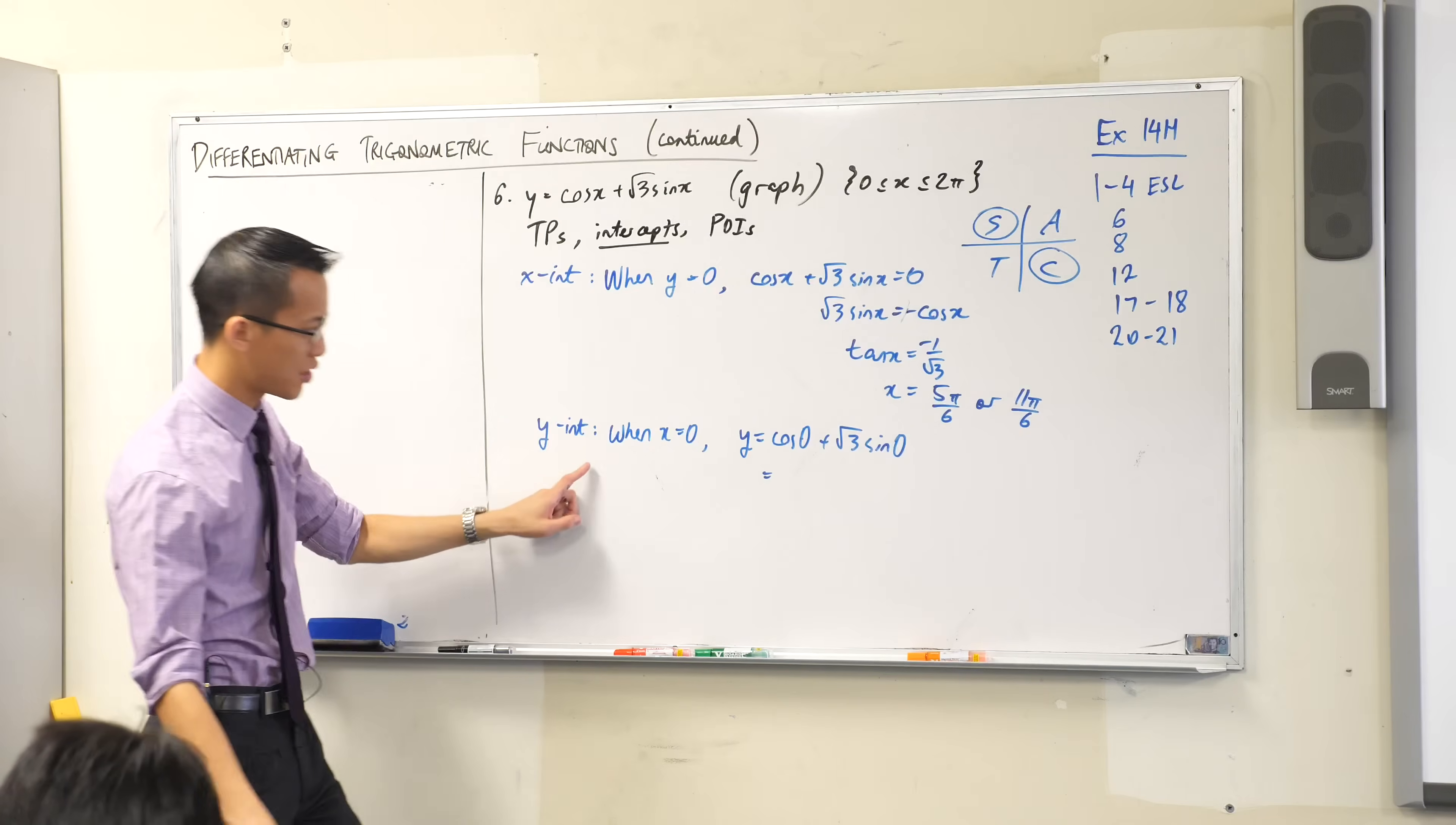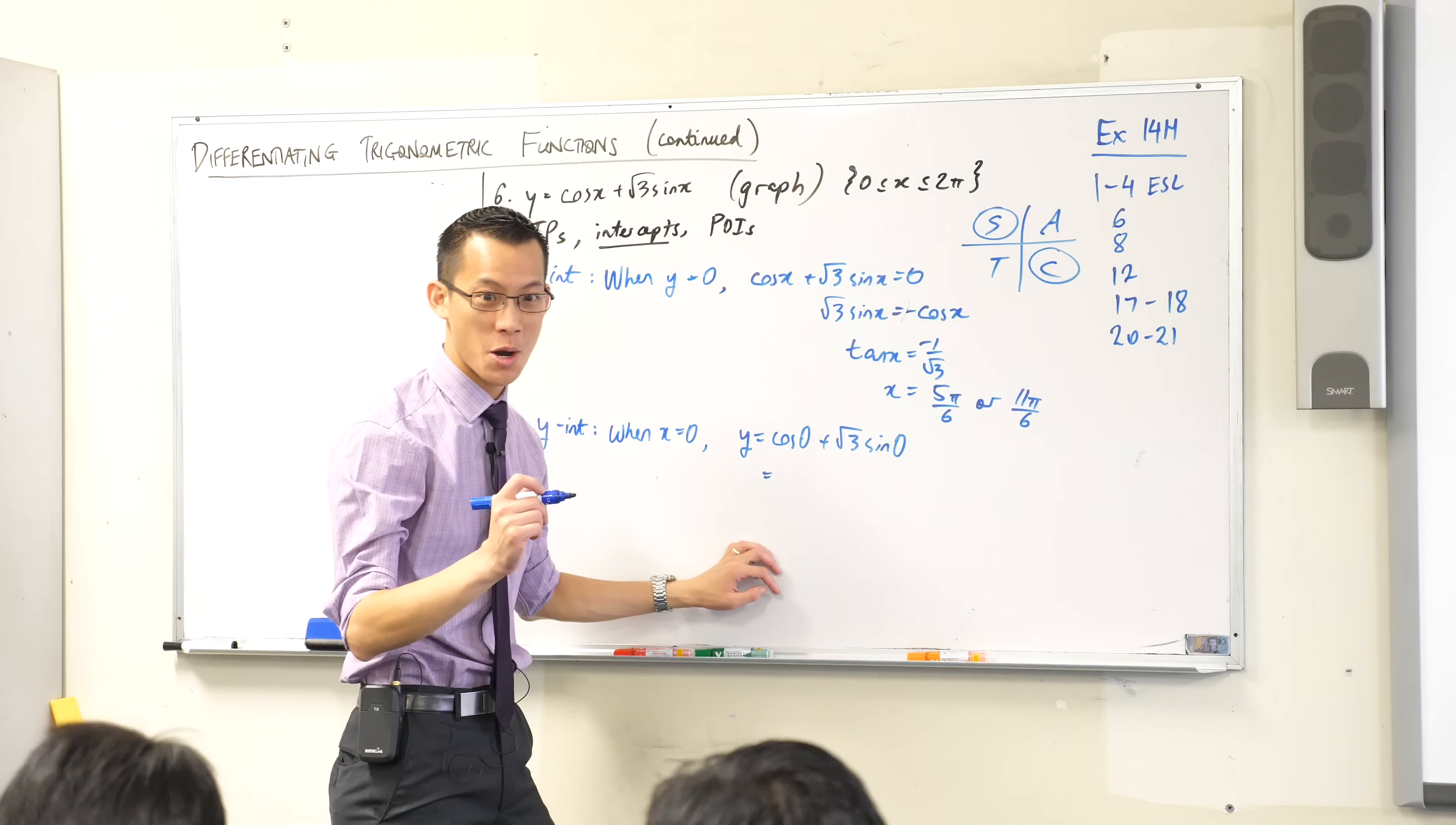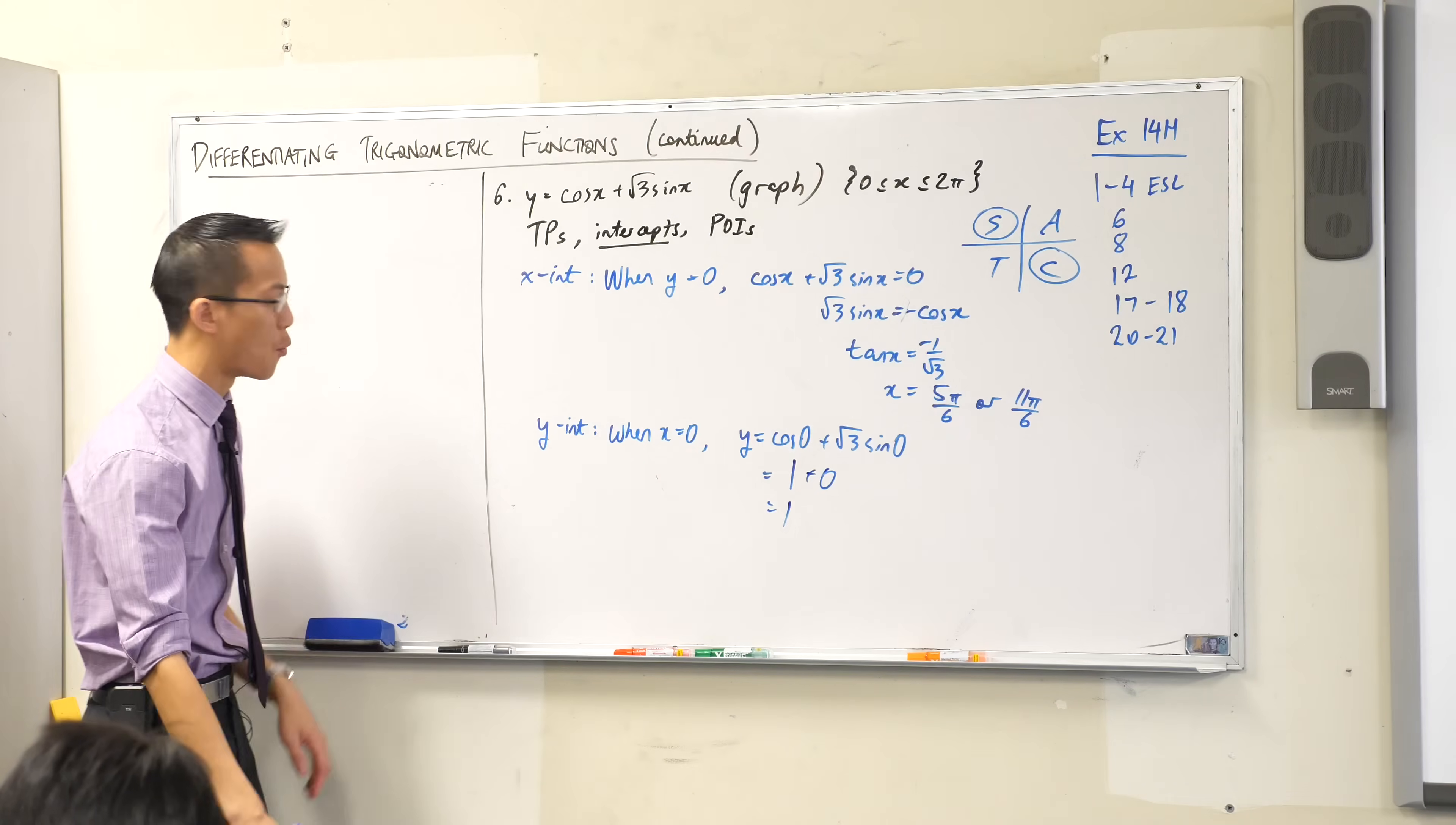Y-intercepts, they're easy to find, substitute in x equals 0. By now we should know what cos 0 is. It should be cos 0, cos 0 is 1, plus root 3 times sin 0, sin 0 is 0. So there is my y-intercept.